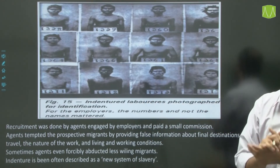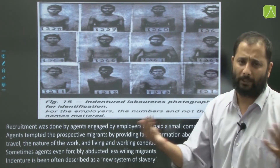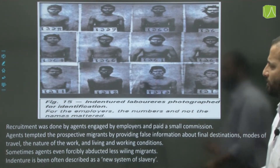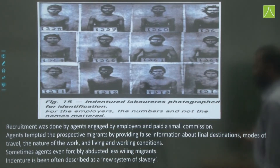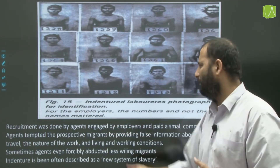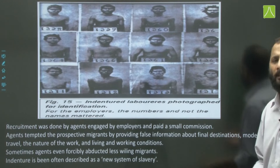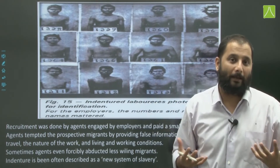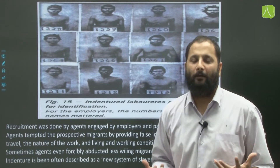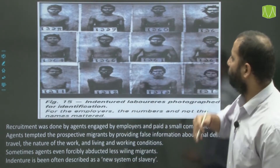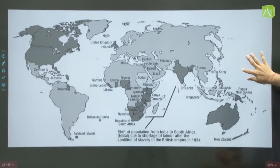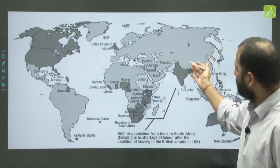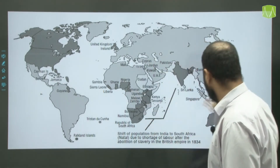When workers arrived at their destination, they found conditions opposite to what they had been told, but could do nothing about it. This shift of population from India to South Africa and other places happened due to shortage of labour. People went from Uttar Pradesh, Bihar, central India, and the dry districts of Tamil Nadu to work in Trinidad, Guiana, Surinam, Mauritius, Fiji, and Ceylon.